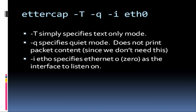We also had to fire up Ettercap. We passed the dash-T option, which specifies text-only mode because we don't want to deal with GUIs. We passed the dash-Q option, which specifies quiet mode and does not print packet content since we don't need it — we're getting everything we need on the other side. Then we have the dash-I option, which specifies the interface. If you were using Ethernet 1, you'd specify ETH1. In my case, I'm using ETH0 as my network card, so I specified ETH0 as my interface.